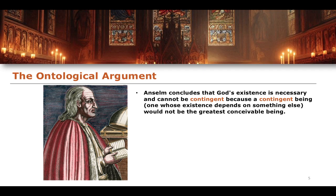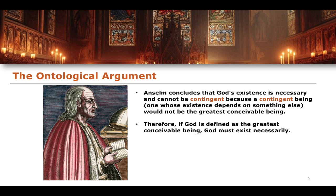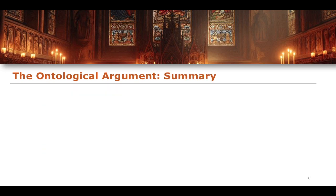Anselm concludes therefore that God's existence must be necessary — it cannot be contingent. A contingent being would depend on something else for its own existence and thus would not be the greatest possible thing that could be conceived. Therefore, if God is defined as the greatest conceivable being, God must exist necessarily. Given that Anselm accepts this definition, he concludes that God has to necessarily exist.